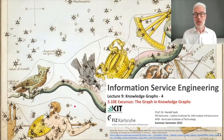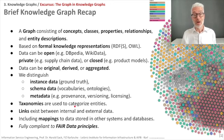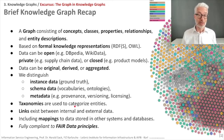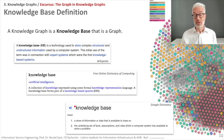This is about the graph in knowledge graphs. Let us briefly recapture the definition of a knowledge graph. A knowledge graph consists of concepts, classes, properties, relationships, and entity descriptions, and is usually based on formal knowledge representation like RDFS or OWL. The data itself can be completely open, private, or closed. It can be original, derived, or aggregated from other data on the web. We distinguish instance data, schema data, and metadata. Taxonomies are used to categorize entities, and links exist between internal and external data, including mappings to other systems and databases. These knowledge graphs are usually fully compliant with the FAIR data principles.